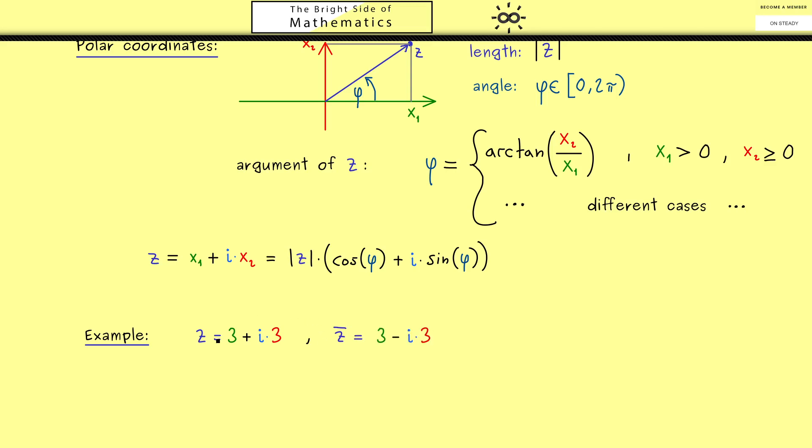However now we are able to multiply z with z bar. This is not hard to see. This gives us 9 plus 9 so 18. Therefore the absolute value of z is the square root of 18. Which can be rewritten as 3 times the square root of 2.